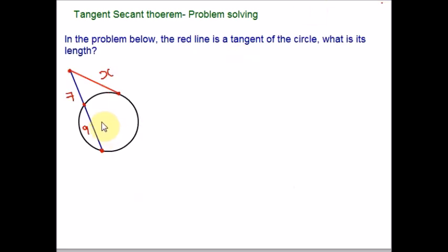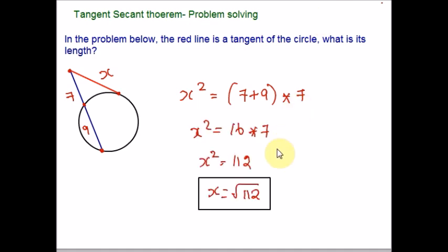Please look at this question. Second example. Red line is the tangent, and the blue line is a secant. It touches the circle at two points. So again, we are going to use the same formula to find the missing length of the tangent. Total length of secant times 7. 16 times 7, that is 112. So the missing length of the tangent would be square root of 112. That's it for this example.